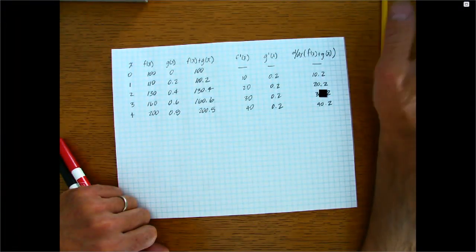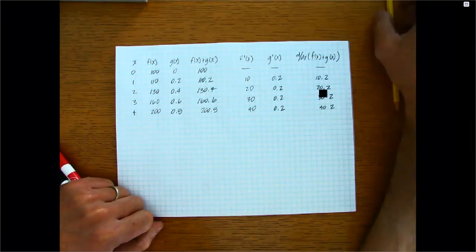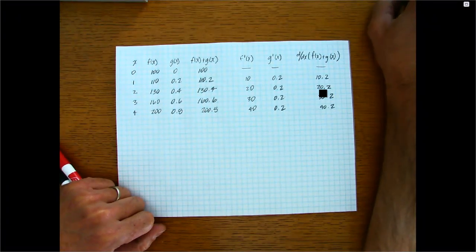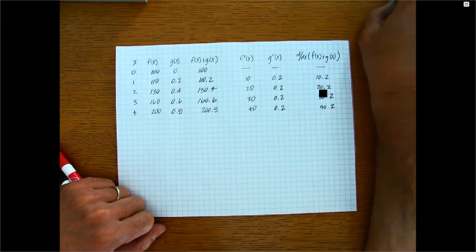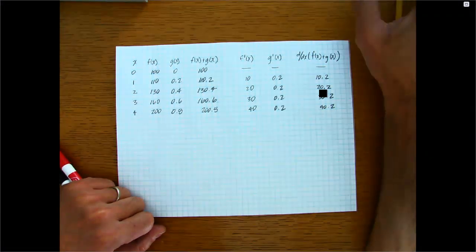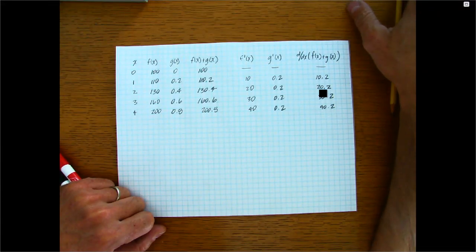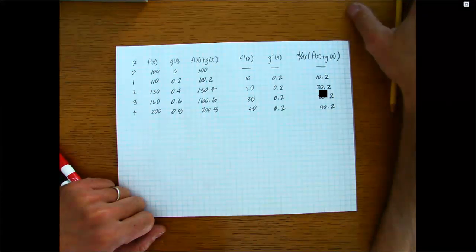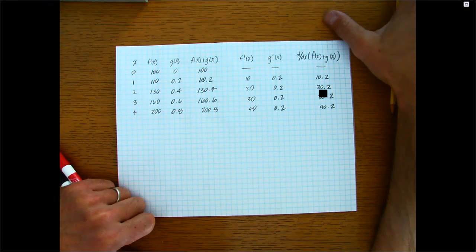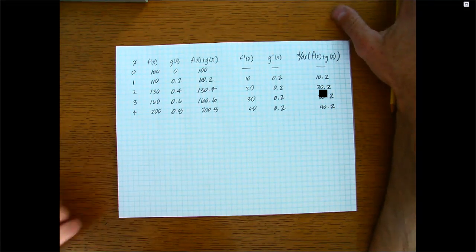These are intuitive proofs based on a limited number of examples. If we wanted more definitive proof, we'd have to go into a study of limits. Your book does have a section on the limit derivations for all of these rules at the end of Chapter 3.